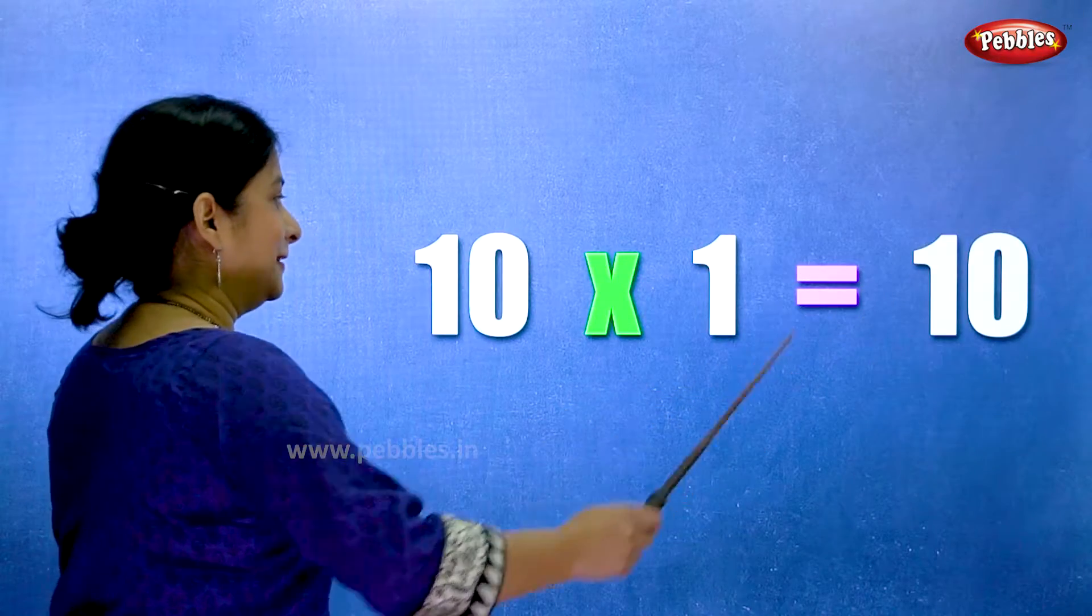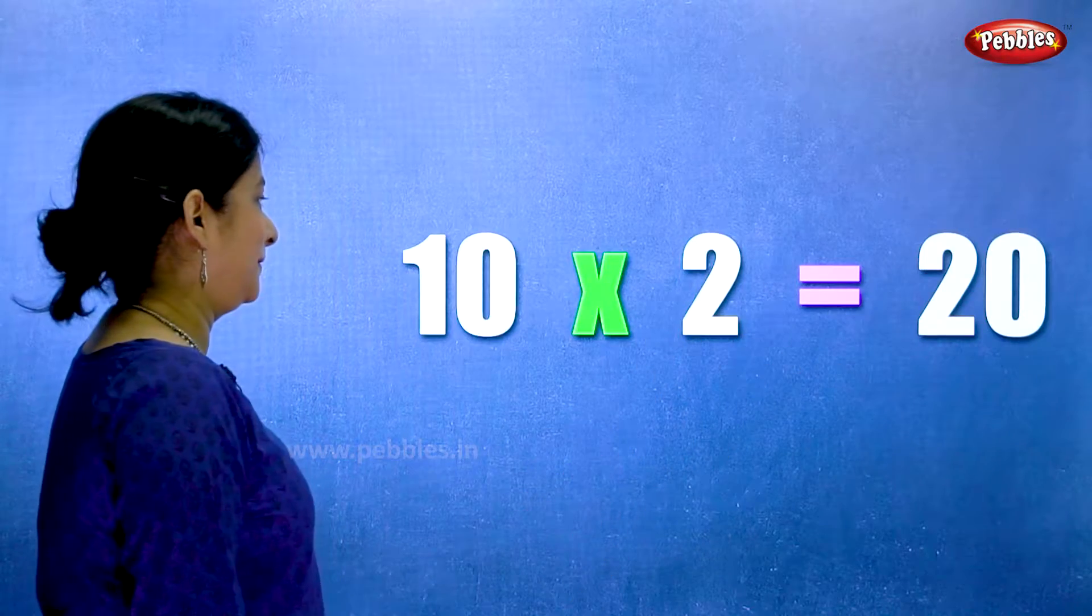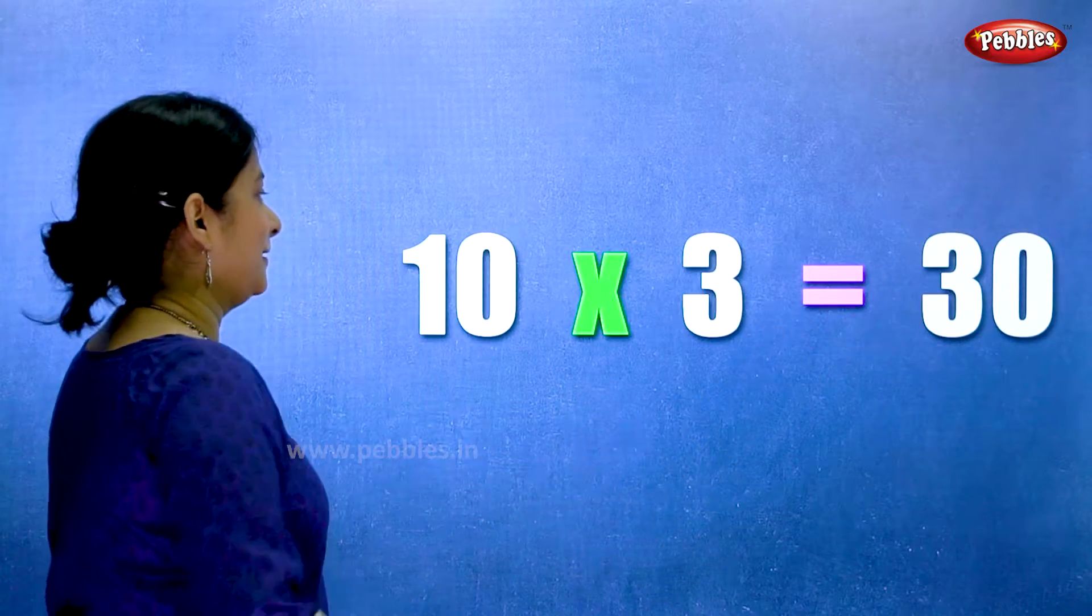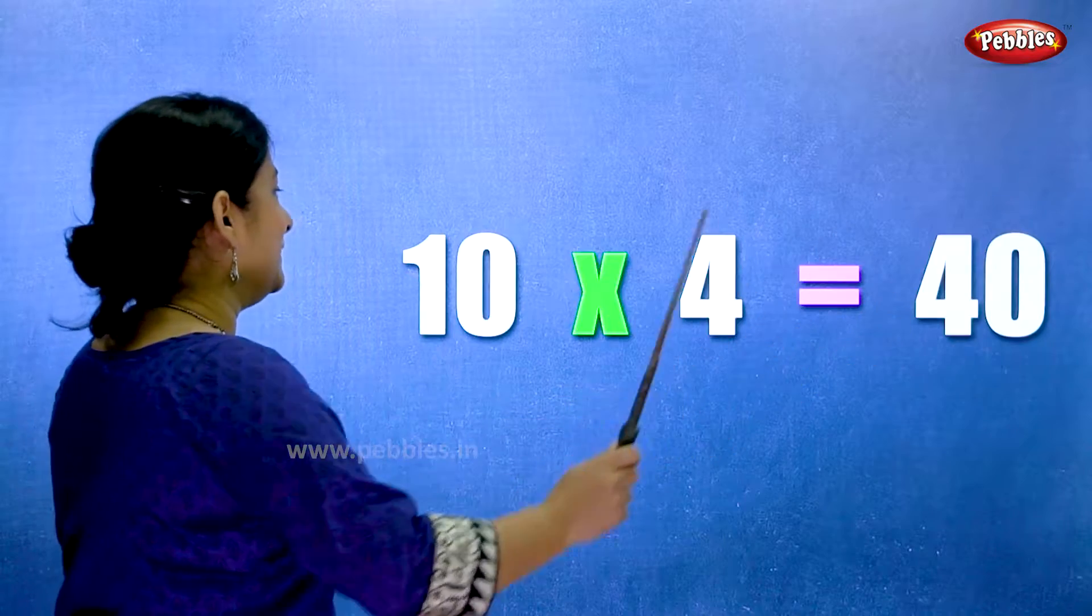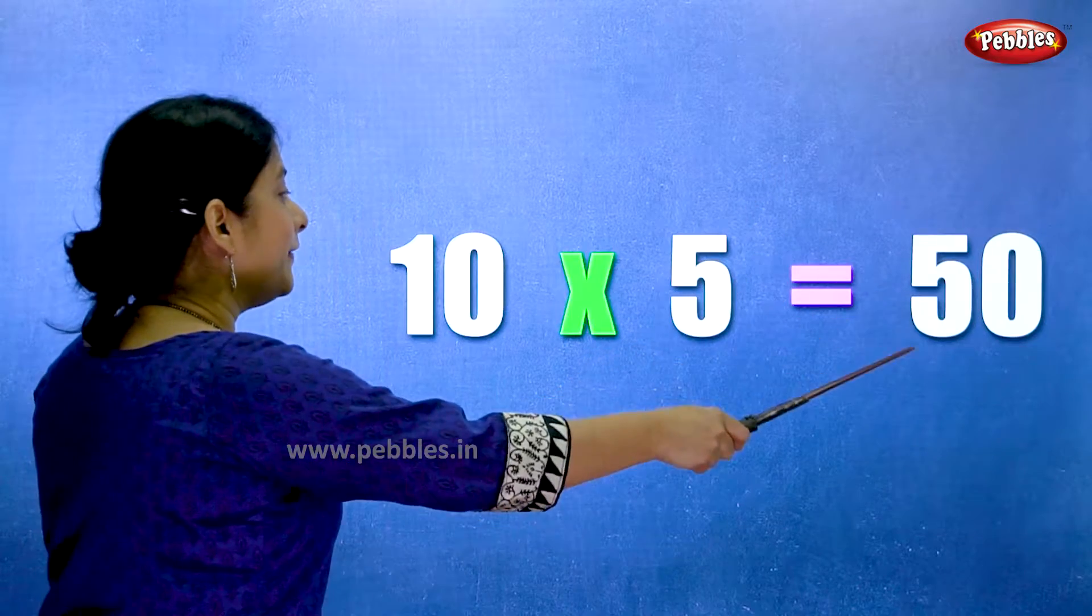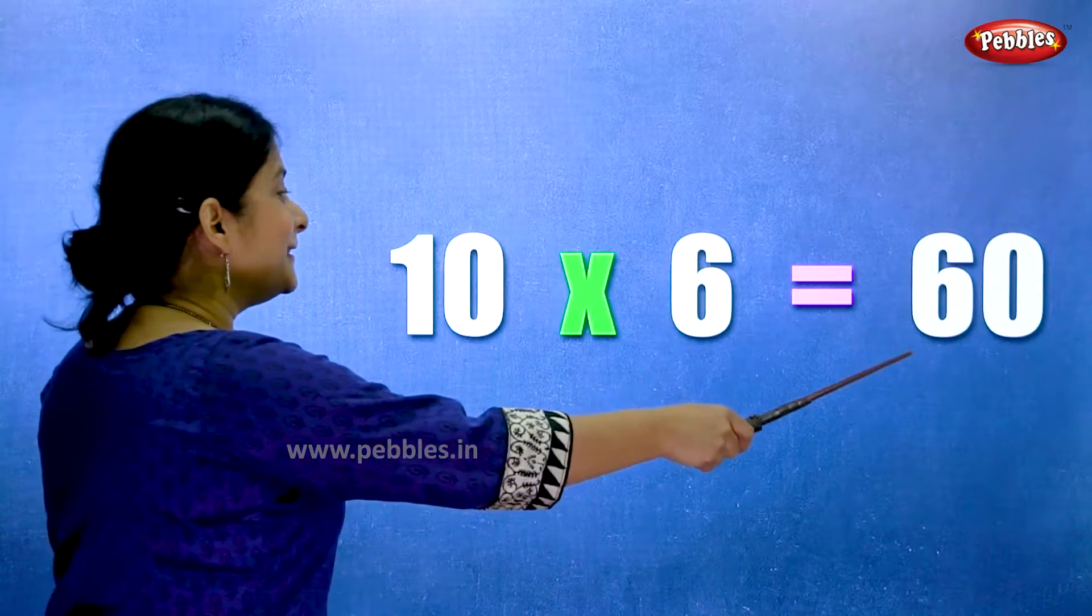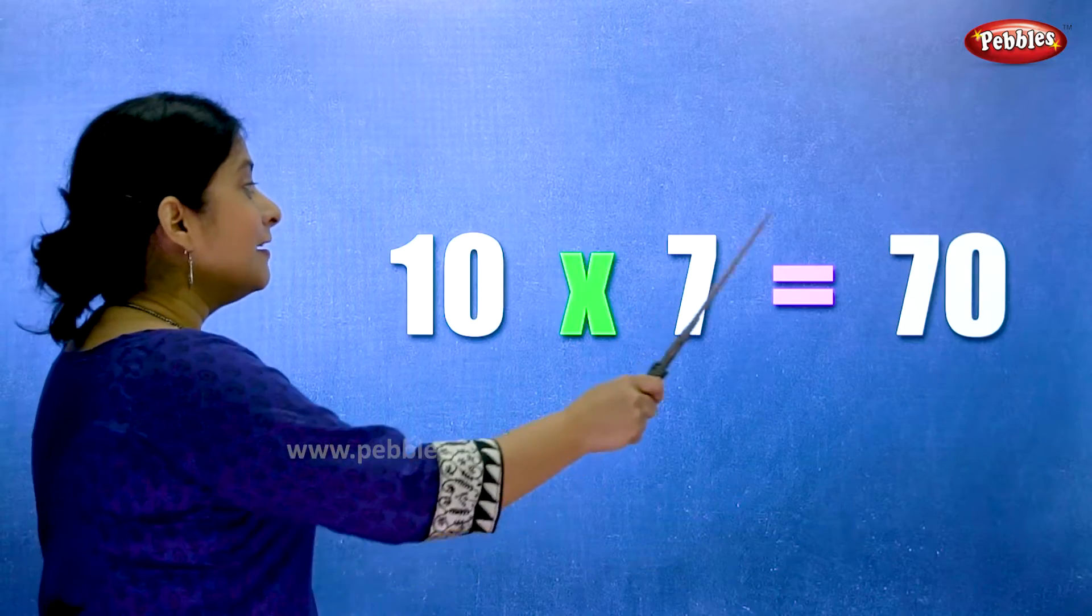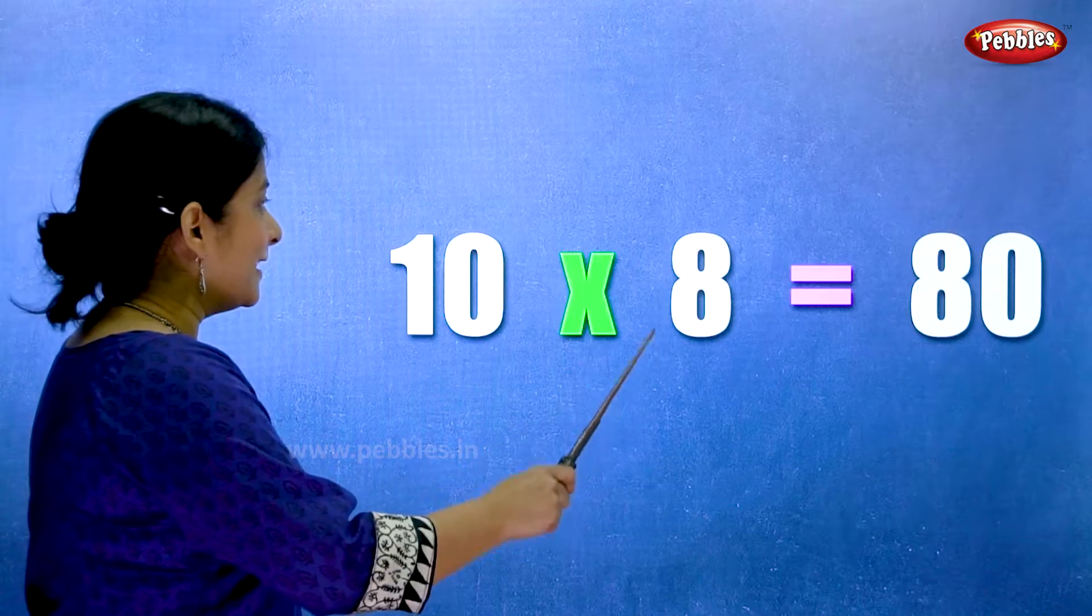Ten twos are twenty. Ten threes are thirty. Ten fours are forty. Ten fives are fifty. Ten sixes are sixty. Ten sevens are seventy. Ten eights are eighty.